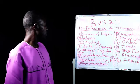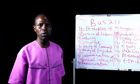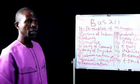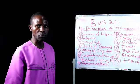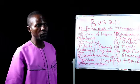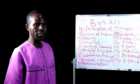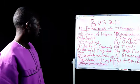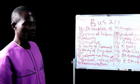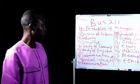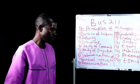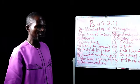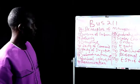We are going to have the principle of unity of command, which is to ensure that everything is done according to plan. Then another one is unity of direction — in order to ensure unity, there is a need to have one head overseeing a particular unit, not more than one head superintending over one unit.